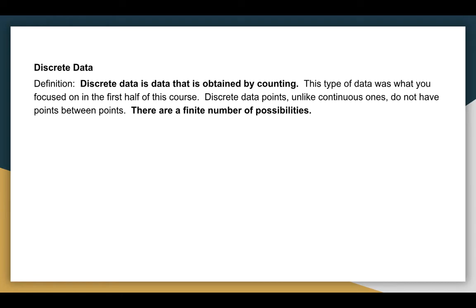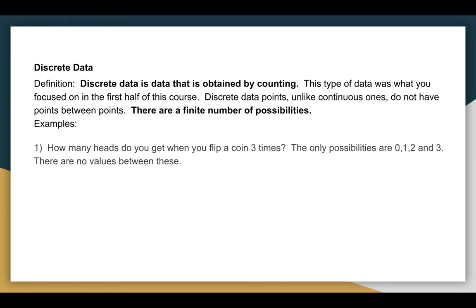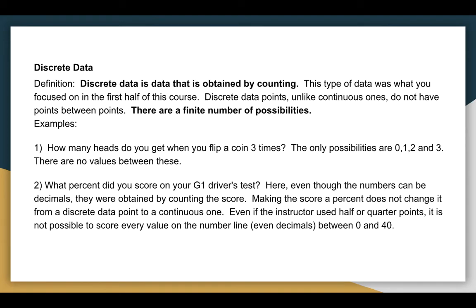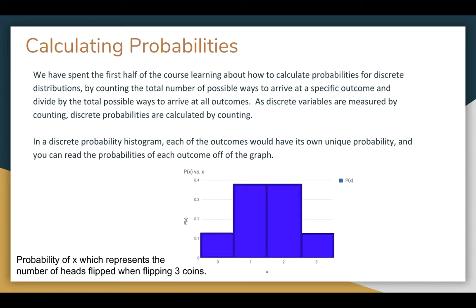Discrete data we spent the first half of the course talking about, so there's finite number of possibilities. So how many heads can you get when you flip a coin three times? What percentage is scoring your G1 test? It's just a score between 0 and 40. You can't get 39.999. And when you're calculating probability with discrete data, you can do it by counting. So N of A divided by N of S. All of these numbers are exact values of how many times a 1 is going to come up out of the total, say, 8.